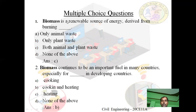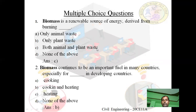Multiple choice questions. First question: Biomass is a renewable source of energy derived from burning — ? Option A: only animal waste. Option B: only plant waste. Option C: both animal and plant waste. Option D: none of the above. Answer is C — both animal and plant waste.